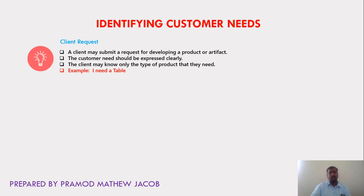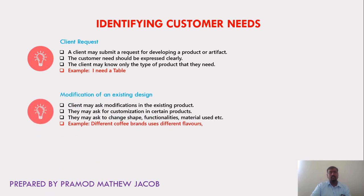For example, the client may say, 'I need a table.' They may not be aware about the different types of table or the dimensions of a table, etc. The next type of customer need is modification of an existing design.